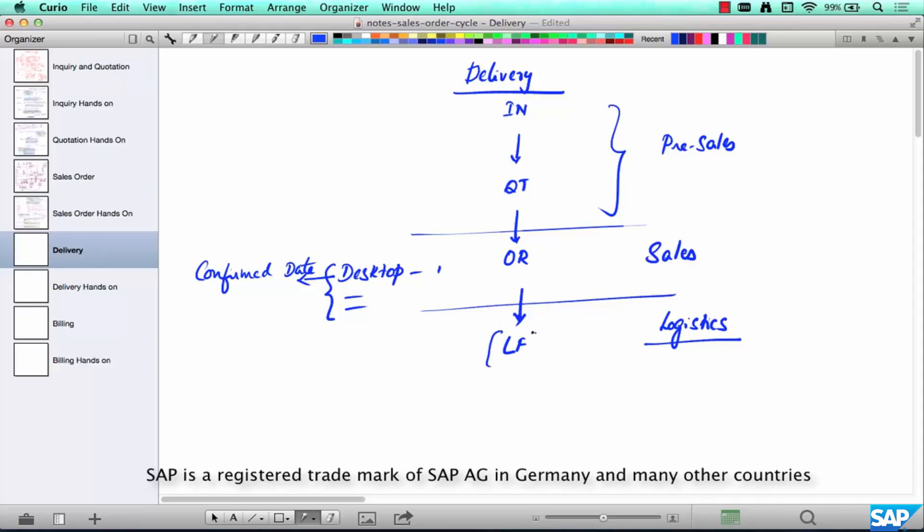When you try to create this delivery, you should create it for that date because if you try to create it before, the system knows that the goods are not going to be available based on the dates available here in order and it will not allow you to create a delivery.